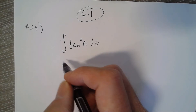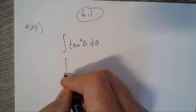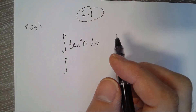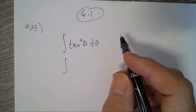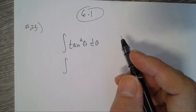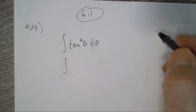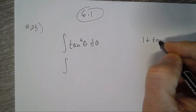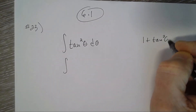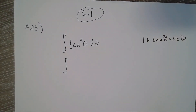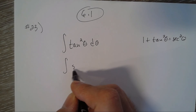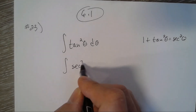but we could rewrite it: tangent squared is the same as secant squared theta minus one, because one plus tangent squared theta equals secant squared theta. So tangent squared equals secant squared theta minus one.